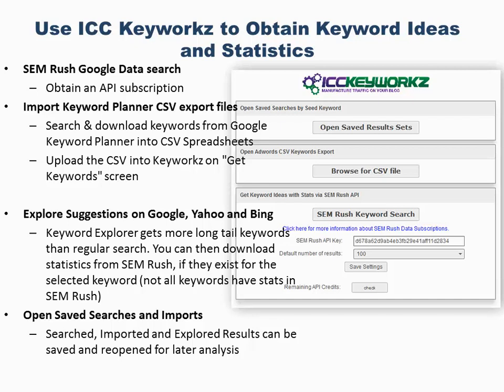Using those three methods to get keywords into the program, you can save those searches in waves of keywords, open saved searches and imports, analyze them again, apply filters, pick keywords, and add them to your project.